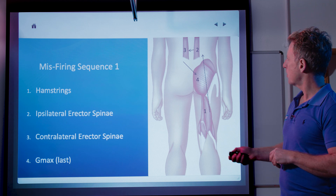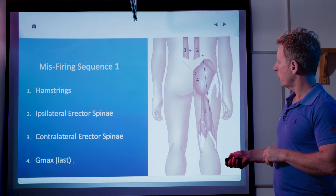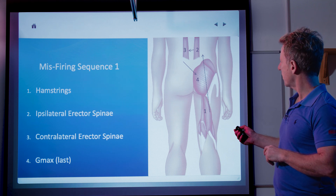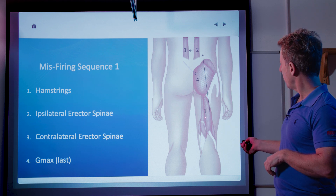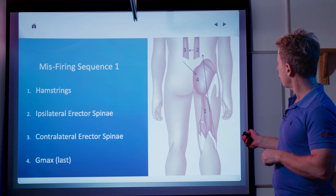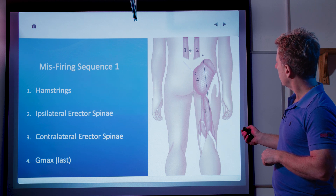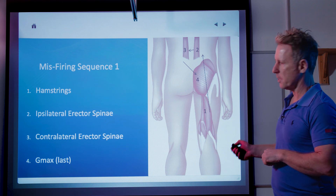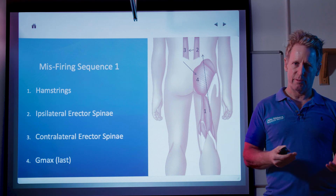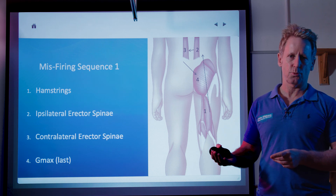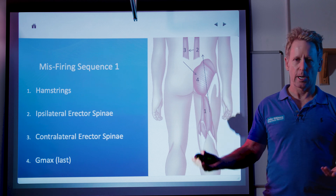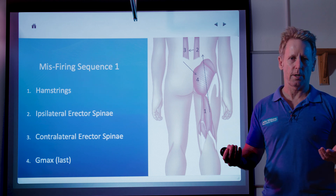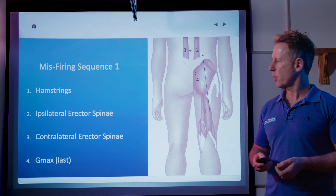Have a look at this picture — misfiring sequence number one. When the patient lifts their leg, number one is the hamstring which does all the work, then it goes straight to the lower back, then the opposite side, and eventually the glutes. So the glute max is last — it is now inhibited. Maybe because the hip flexor is too short and too tight, because it's protecting a labral tear or a degenerative hip joint. And now the hamstring works too hard and you get recurrent hamstring strains.